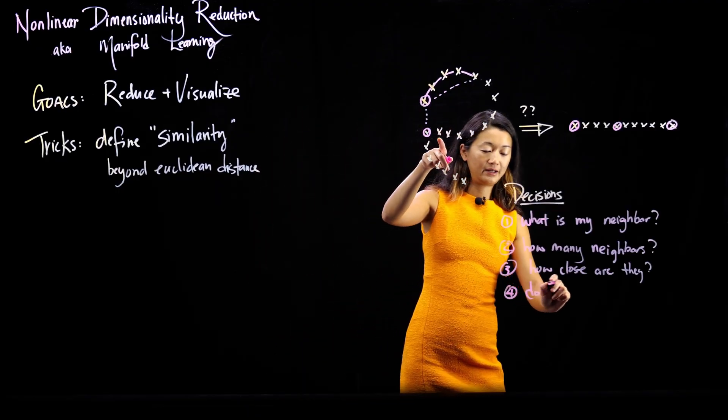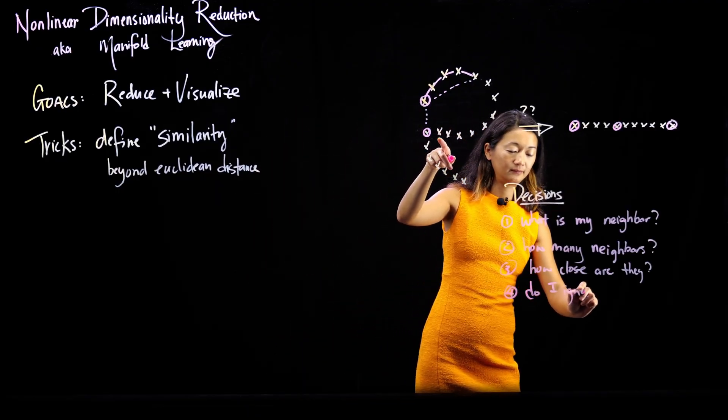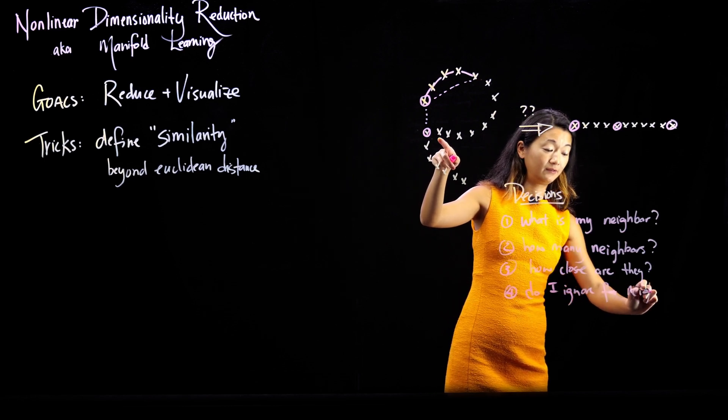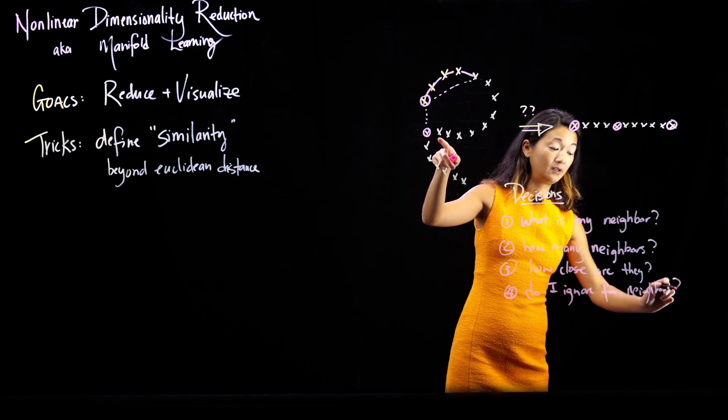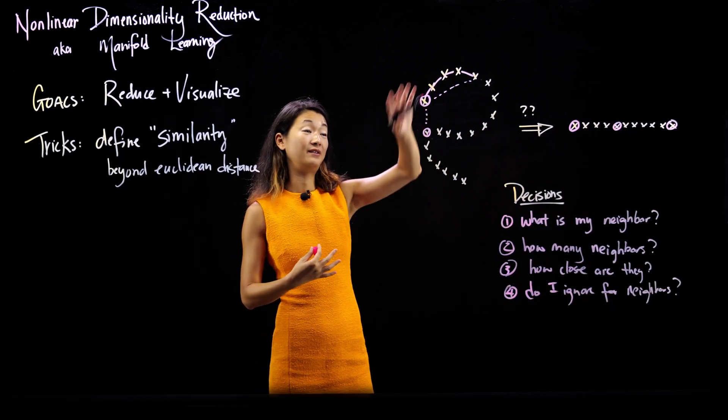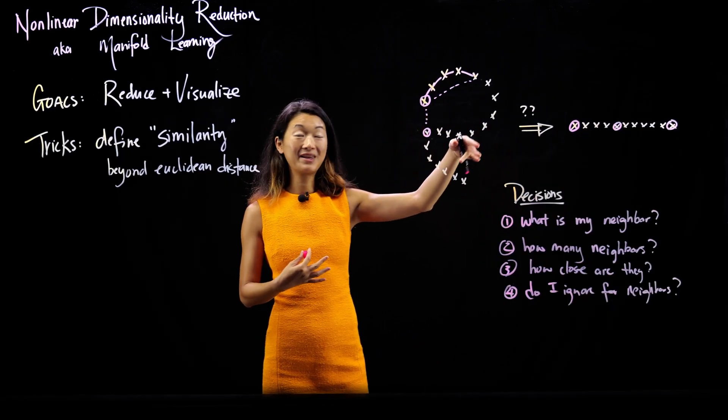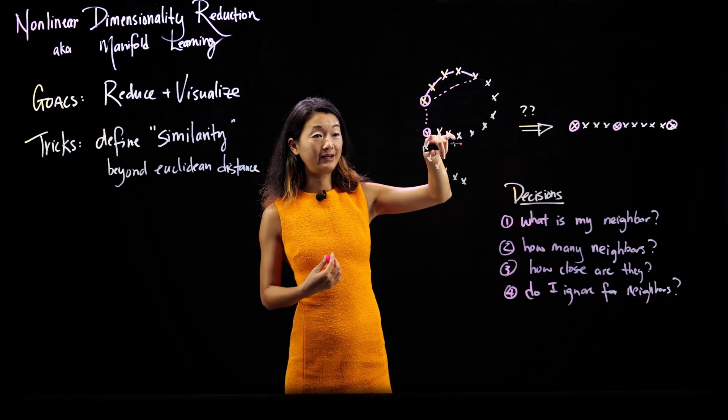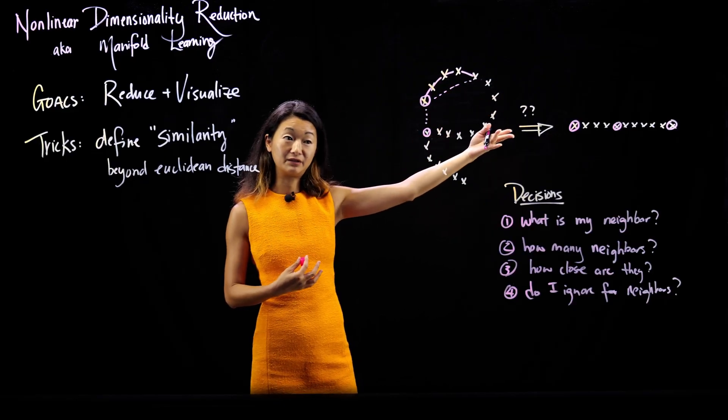Do I ignore far neighbors? Even though they're not that far away, what is a robust way that I can reason through this graph of this kind so that I end up being connected to these neighbors along my road but are not connected to this neighbor over here because they're on a different road, let's say.